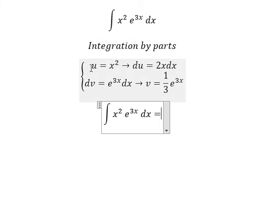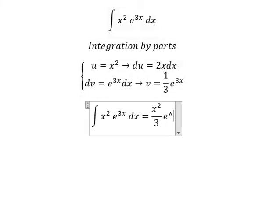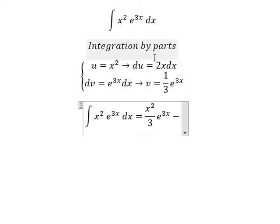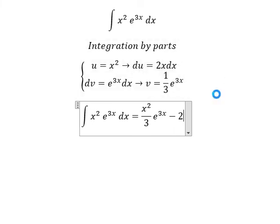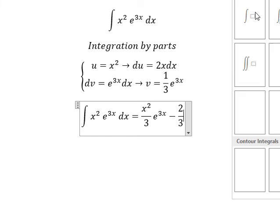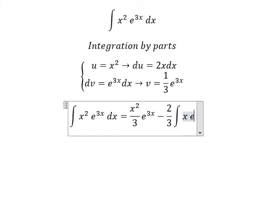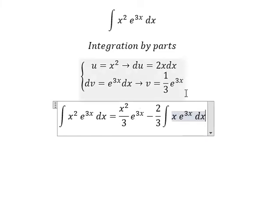So we have u multiplied by v. So that should be x squared over 3 e to the power of 3x minus du multiplied by v. So we have 2 over 3 and we have the integration x e to the power of 3x dx.